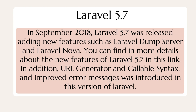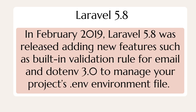In September 2018, Laravel 5.7 was released, adding new features such as Laravel Dump Server and Laravel Nova. In addition, a URL generator, callable syntax, and improved error messages were introduced in this version.